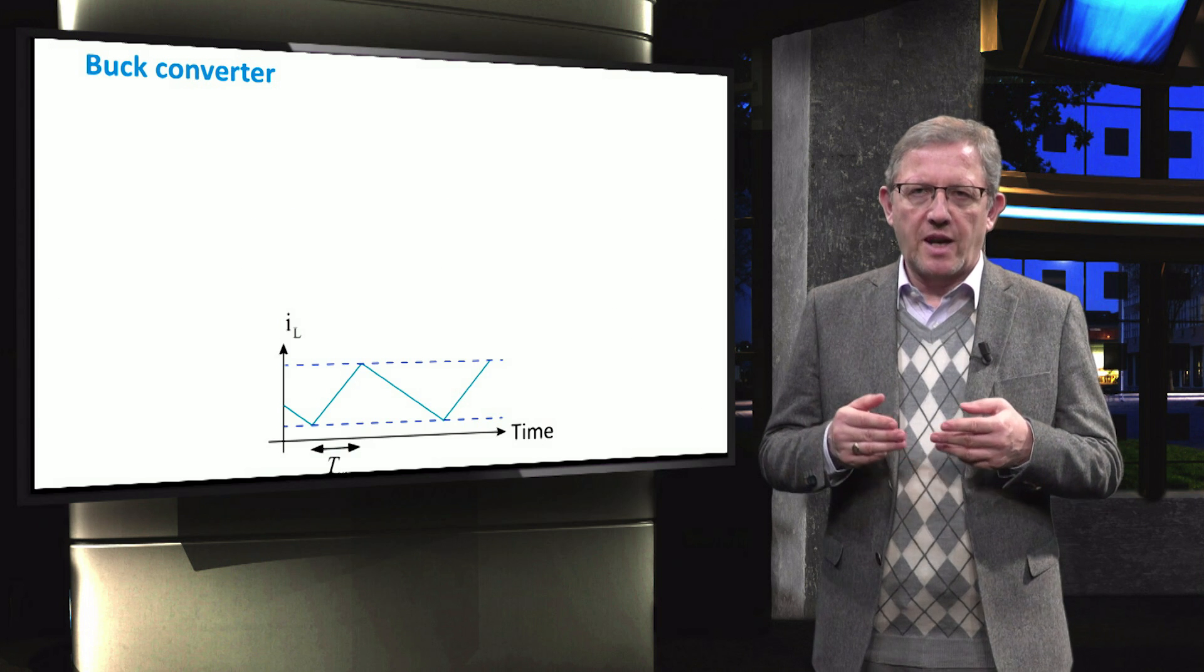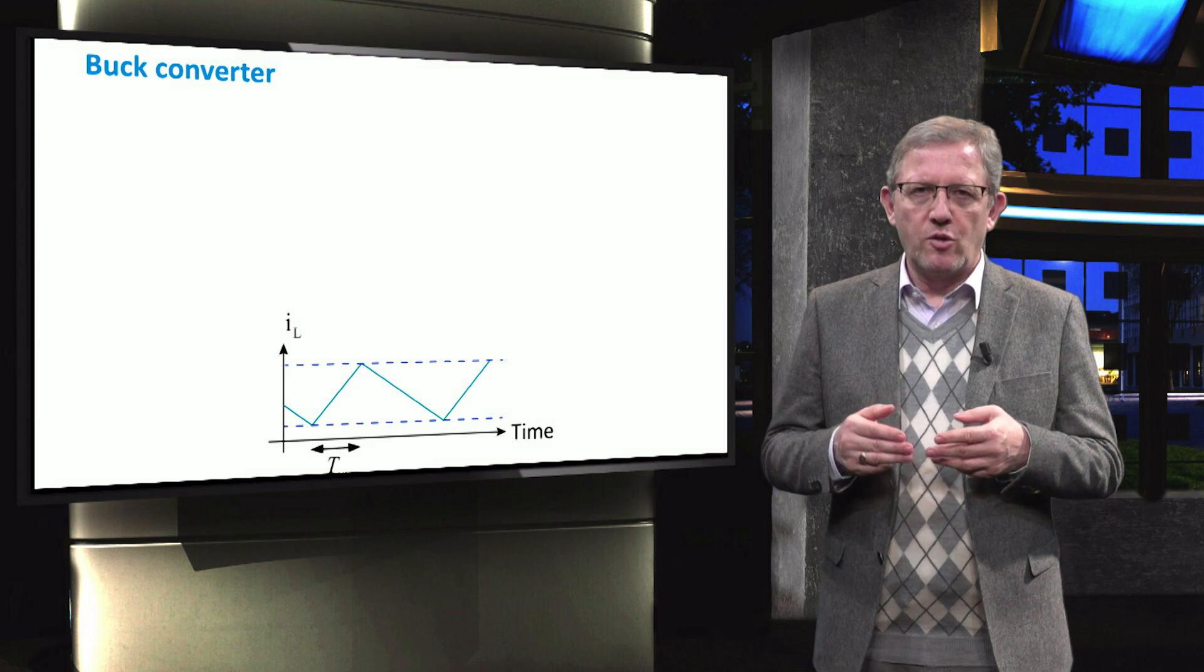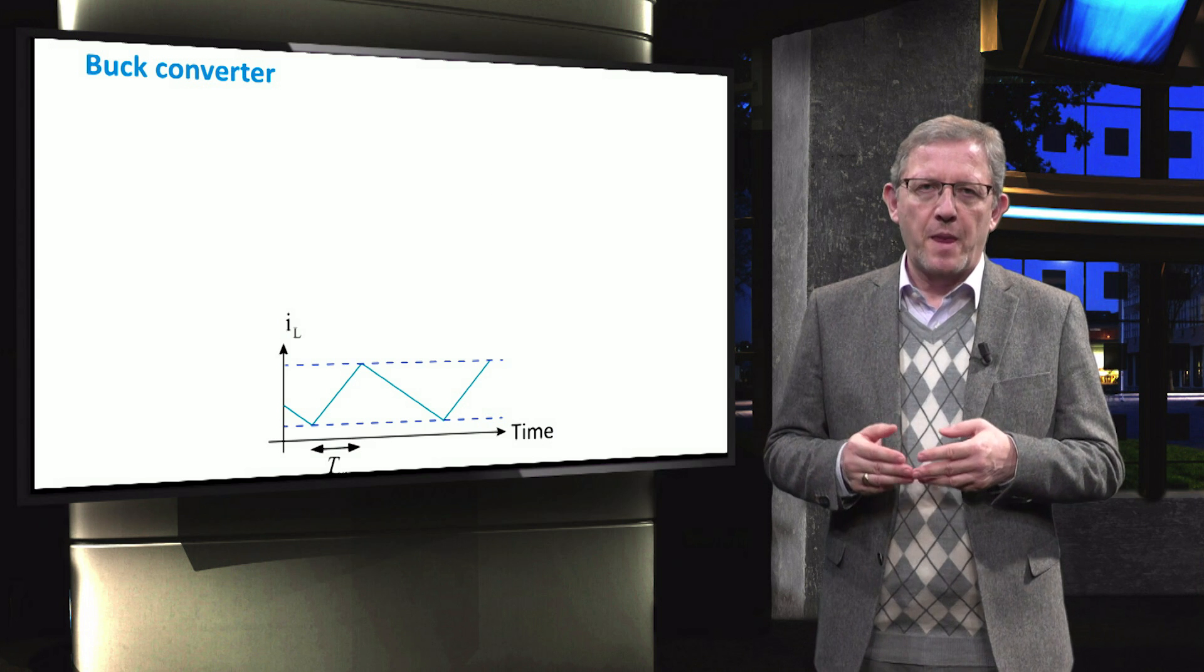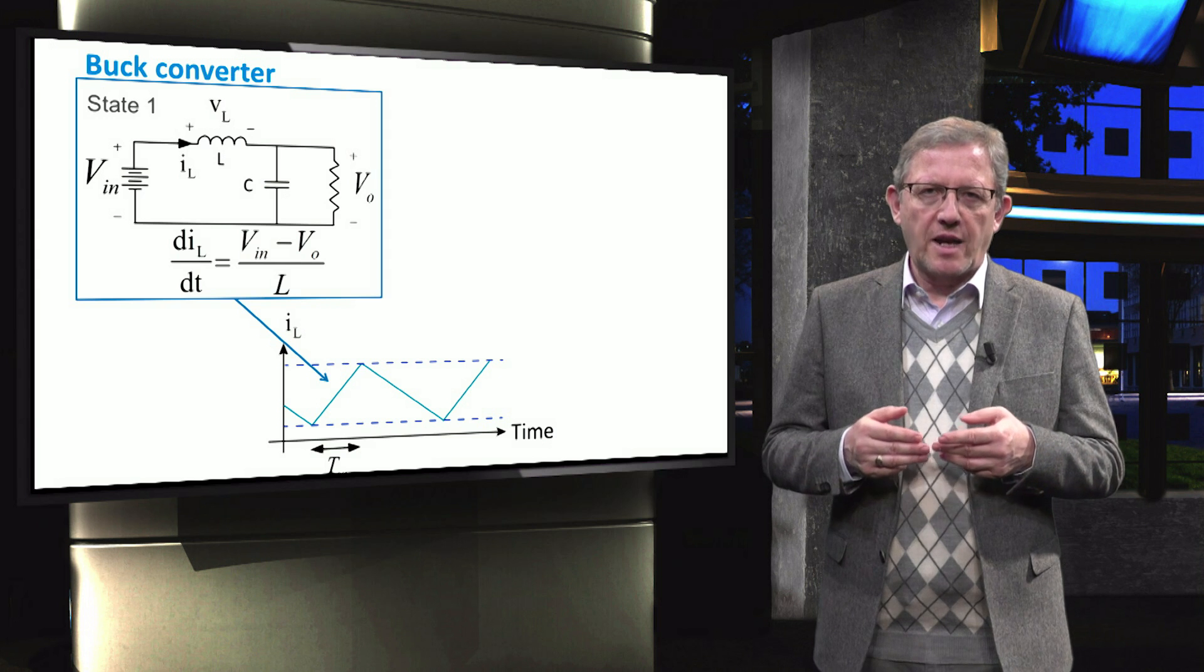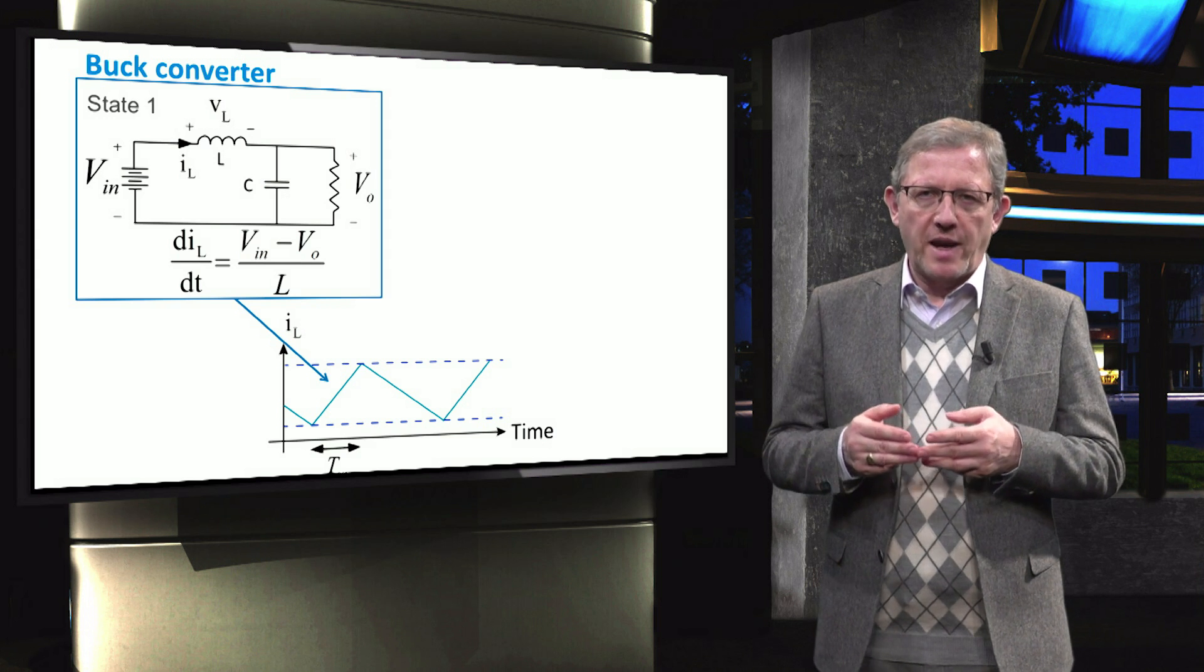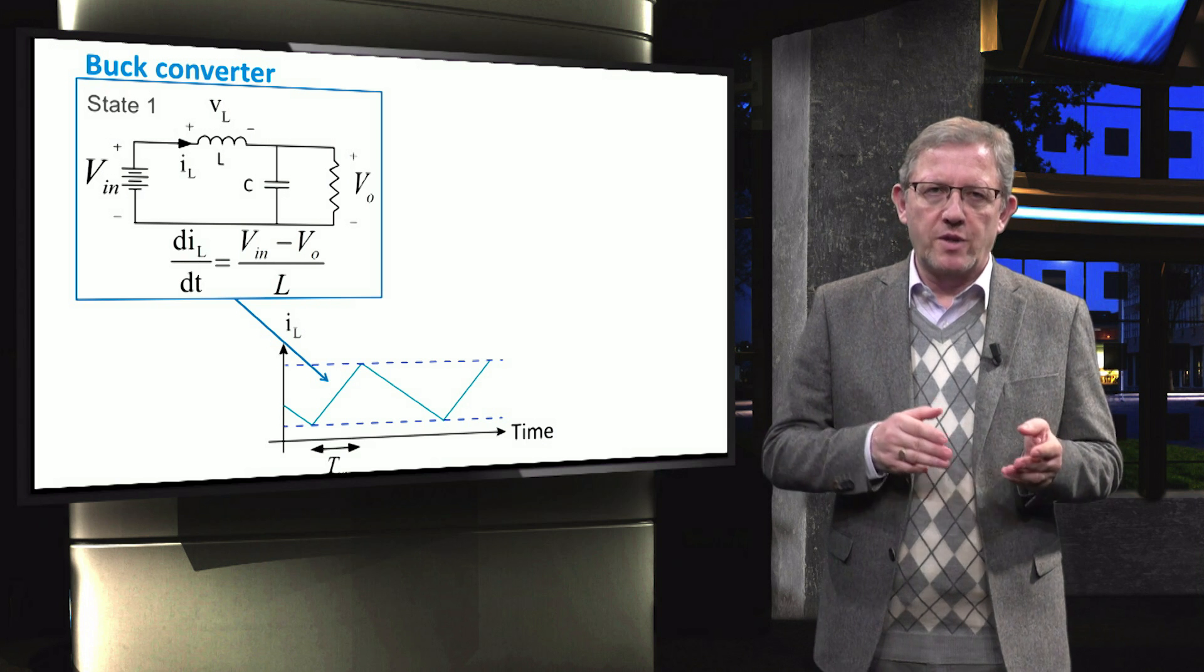Let us now see how the current of the inductor changes during these two operating states as the inductor current is shown in the figure. During the first state, the current of the inductor increases where the current derivative depends on the difference of the input and output voltage.